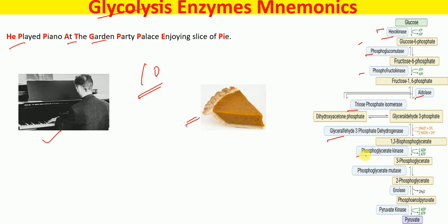Party P for phosphoglycerate kinase, palace P for phosphoglycerate mutase, enjoying E for enolase, pie PI for pyruvate kinase.